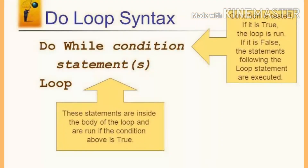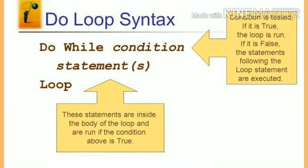Good morning children. In last class we learned about the conditional structures in VB. Next is looping structures in VB. In that, the first one is do loop. Do loop is used to execute a set of statements repeatedly based on a condition. There are four types of do loops.